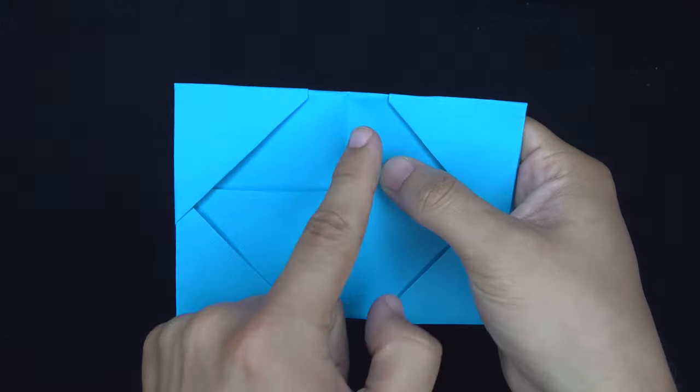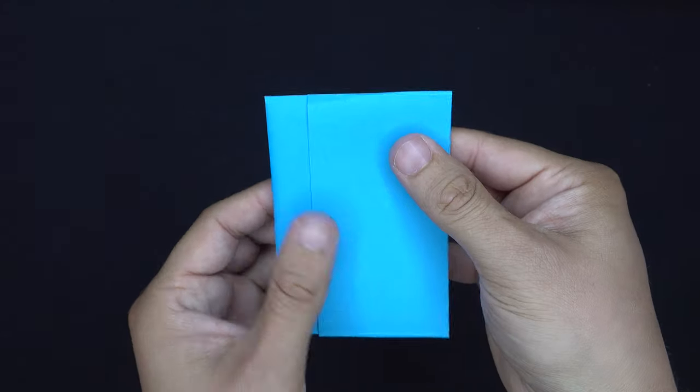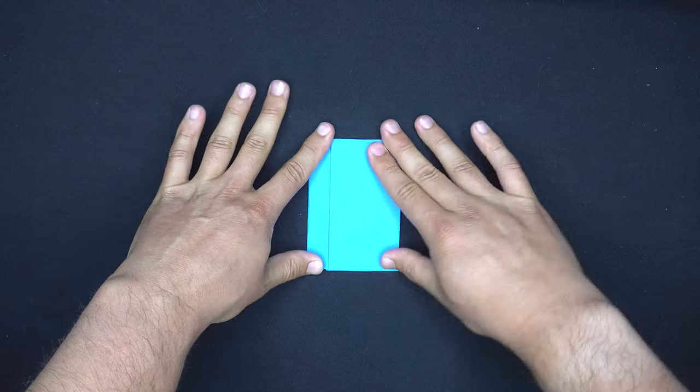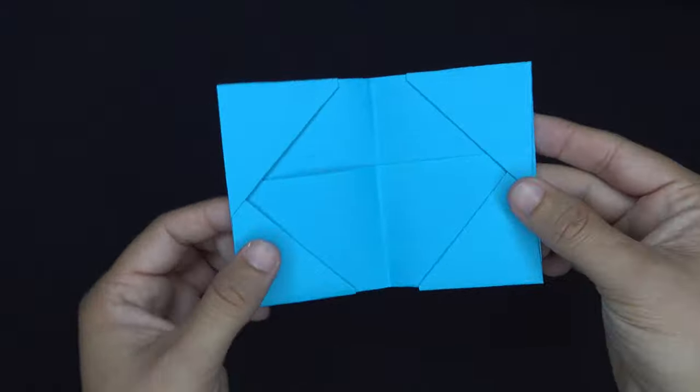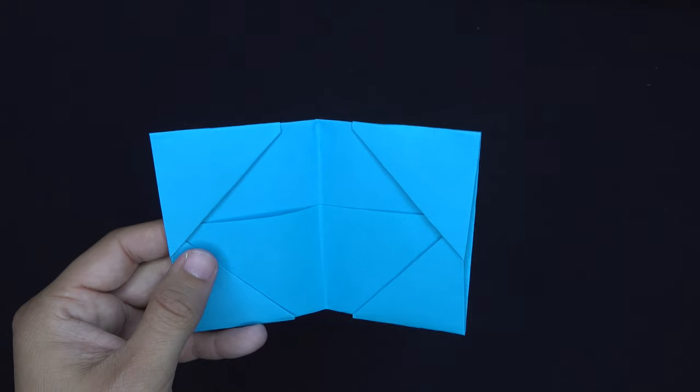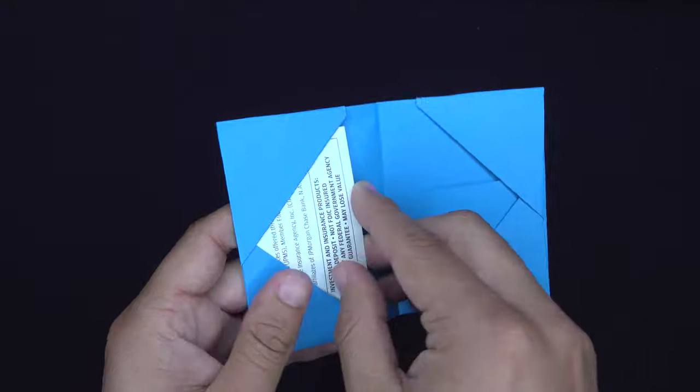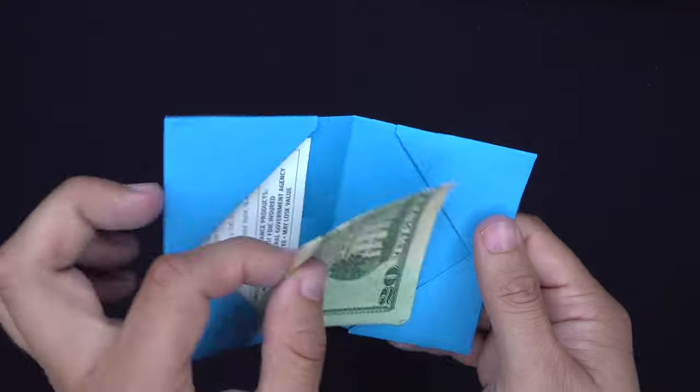Take the left edge and fold it across on this vertical line and make sure it's nice and flat once again. Now we've completed the minute wallet and you could take the card and slip it into the left side pocket. Take the cash and slip it into the right.